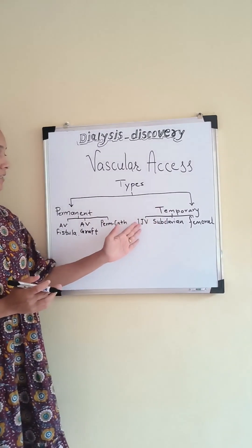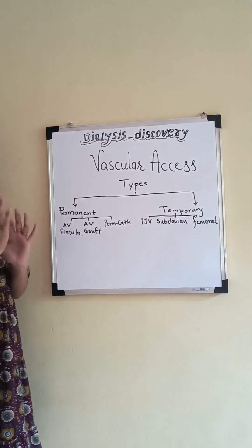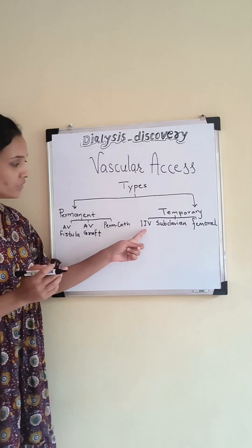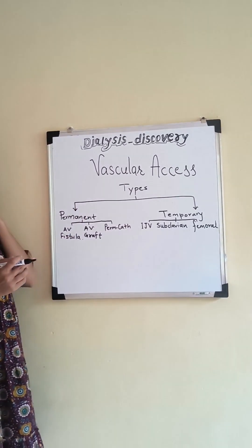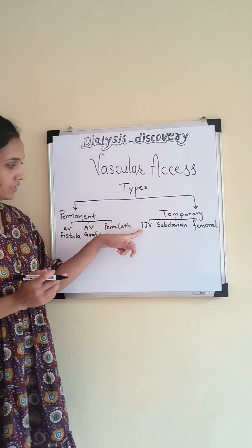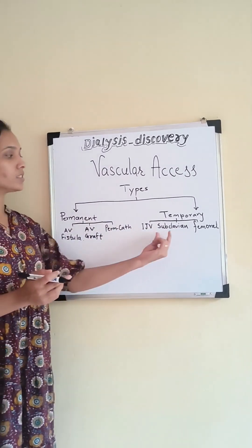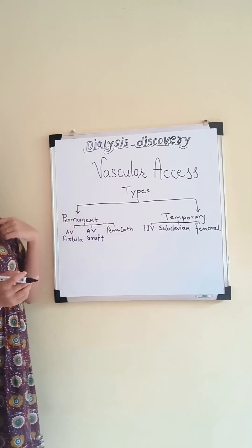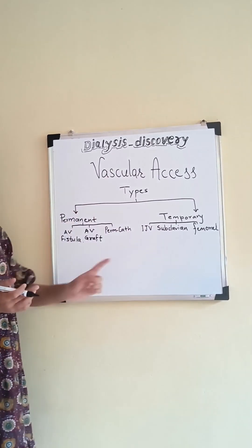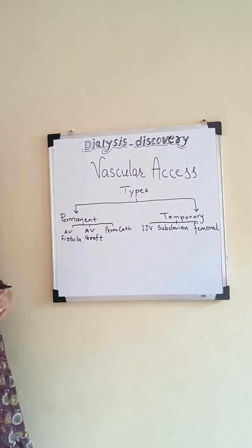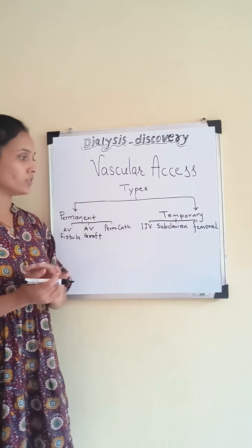Under temporary access, there are three different insertion sites for the CVC, or central venous catheter. The IJV, or internal jugular vein, is where the catheter is inserted near the neck. Then there is the subclavian catheter, inserted below the clavicle bone in the subclavian vein. And when the catheter is inserted in the femoral vein, that is the groin region, that is called femoral access.